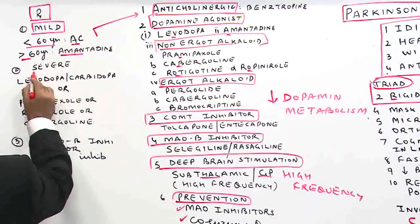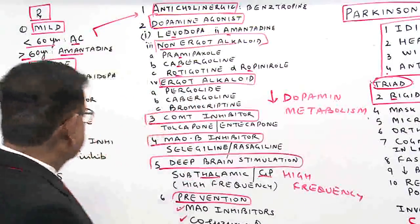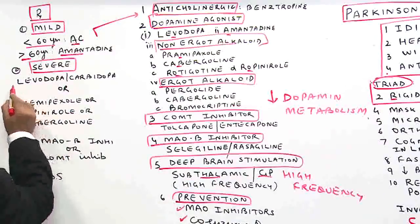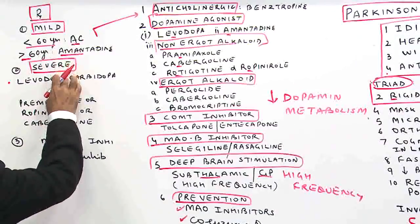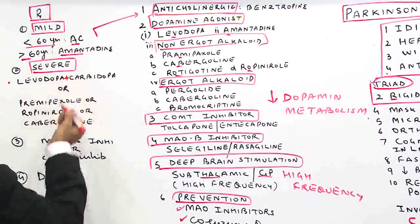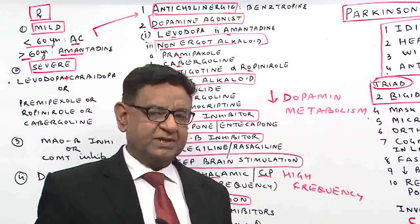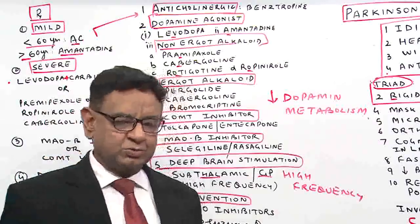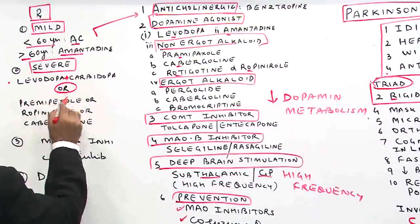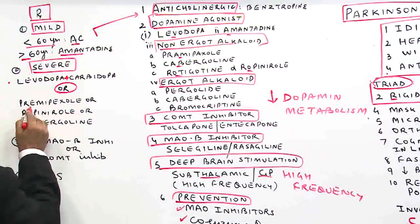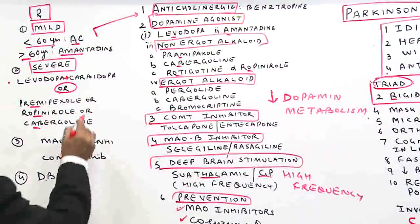That was treatment of mild disease. If severe disease is present, we can use either levodopa plus carbidopa combination — carbidopa simply prevents the breakdown of dopamine in the peripheral circulation, so more drug reaches the brain — or we can give pramipexole, ropinirole, or cabergoline.